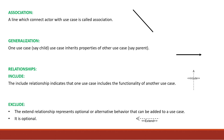The next component is generalization. Generalization means that one use case has properties of another use case. For example, we are all our parents' children and have some properties gained from them. So generalization is the same as inheritance — a child use case inherits some properties from a parent use case.